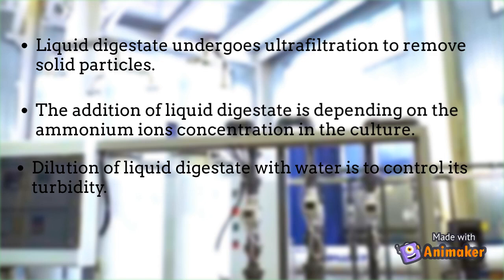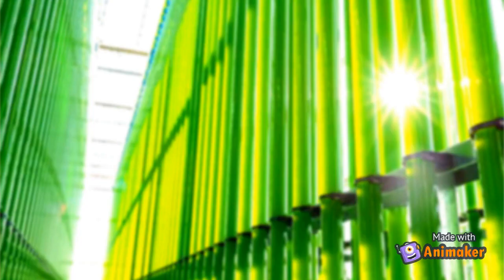This pre-treated liquid digestate acts as a nitrogen source and is further supplemented with required nutrients. The addition of liquid digestate depends on the ammonium ion concentration in the culture. The pH value is controlled by adding sodium hydroxide continuously or in batch, to compensate for hydrogen ions released from ammonium ion uptake. Liquid digestate is diluted with water to control its turbidity.